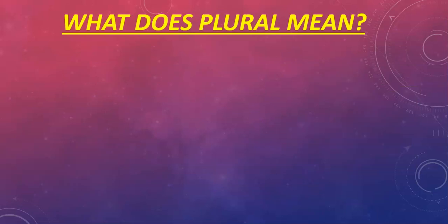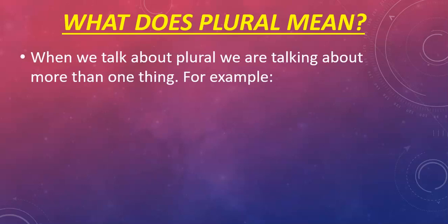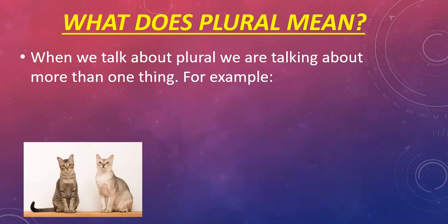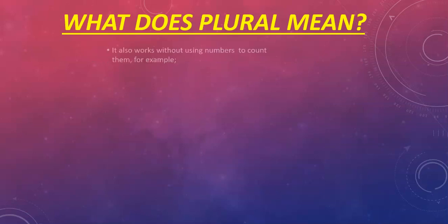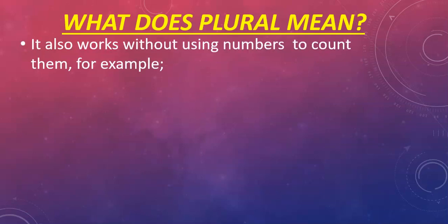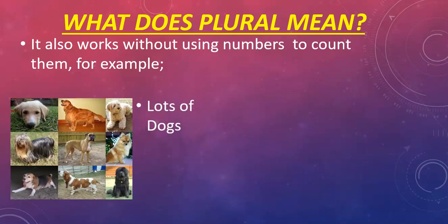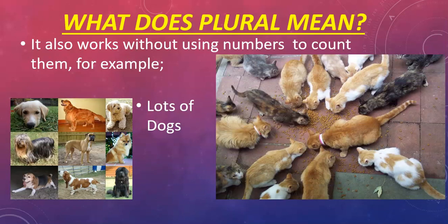Now we know what single means, what does plural mean? When we talk about plural we're talking about more than one thing. For example, two cats, four dogs. It also works without using numbers to count them. For example, lots of dogs and too many cats.